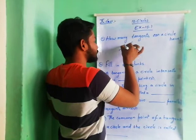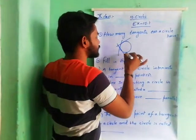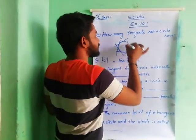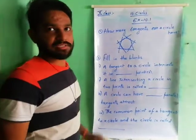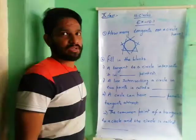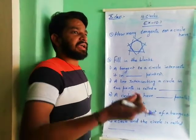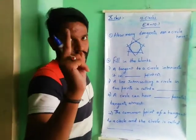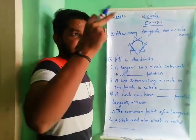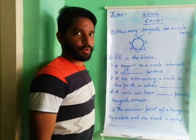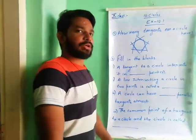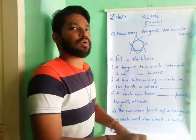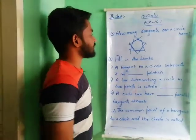This is 1, this is 2, this is 3, this is 4, this is 5, this is 6, this is 7 — so many tangents can exist. Because at a point on a circle there exists only one tangent. A circle is a combination of so many points, so so many points means so many tangents exist.